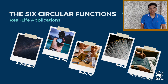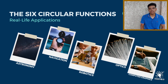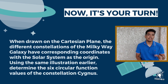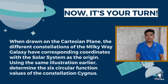The six circular functions are applicable in many real-world scenarios. Fields such as astronomy, navigation, robotics, optics, and computer graphics are notable examples of today's lessons seen outside the classroom. Our example earlier was an application of constellation and navigation in astronomy. Now it's your turn. Solve for the six circular function values of the given problem flashed on the screen. Feel free to pause this video as you solve it and see the answers afterward.